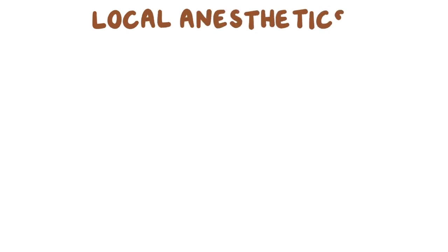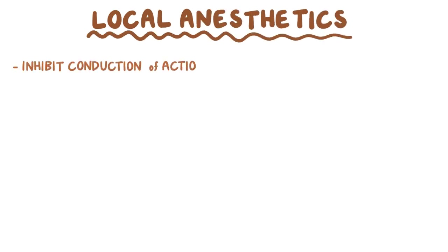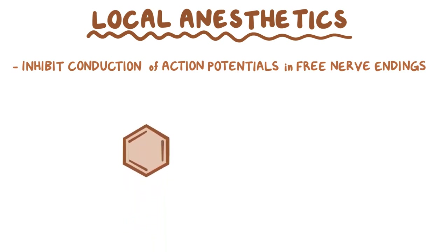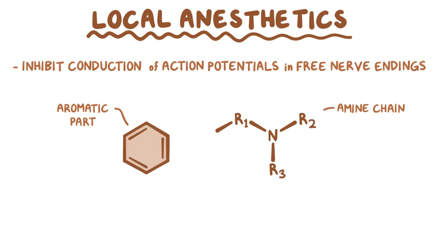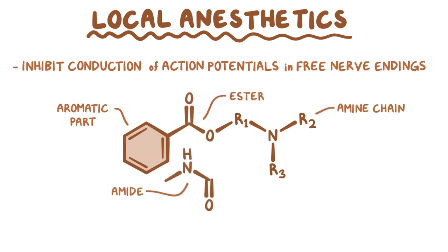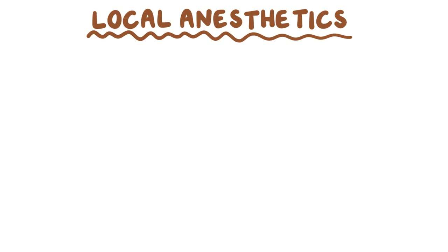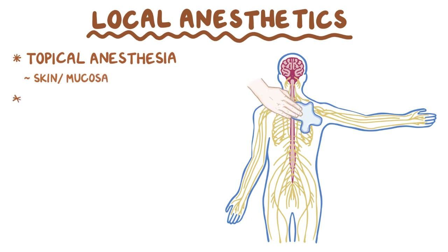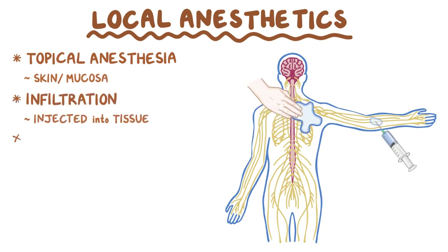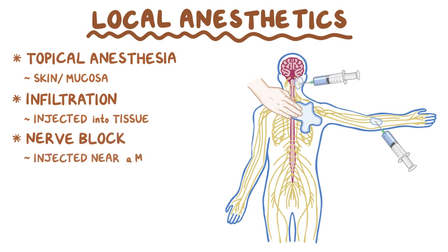Local anesthetics are used to inhibit the conduction of action potentials in free nerve endings. These medications are molecules that have an aromatic part and an amine chain linked by either an ester or an amide bond. There are a number of ways to administer them: topical anesthesia applied directly to the skin or mucosa, infiltration where the medication is injected into the tissue, or nerve block where the medication is injected near a major nerve.